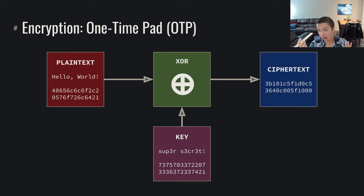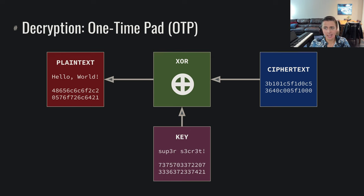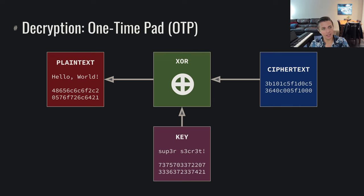Some bytes could be interpreted as ASCII characters, some won't be — it's just completely random data. The recipient without that key is not going to be able to recover it. If we want to return to the plaintext, we just need to XOR again with the key. We XOR the ciphertext with the key and we return back to the plaintext.